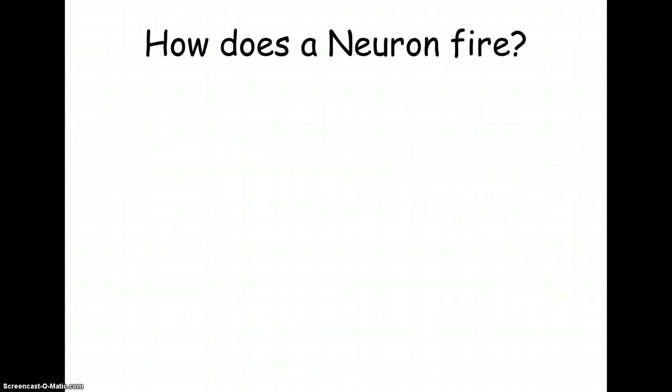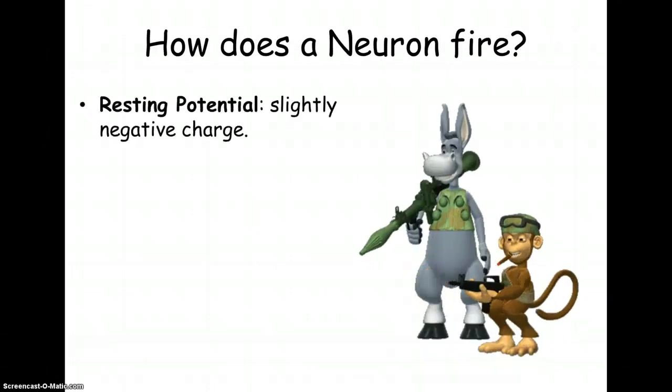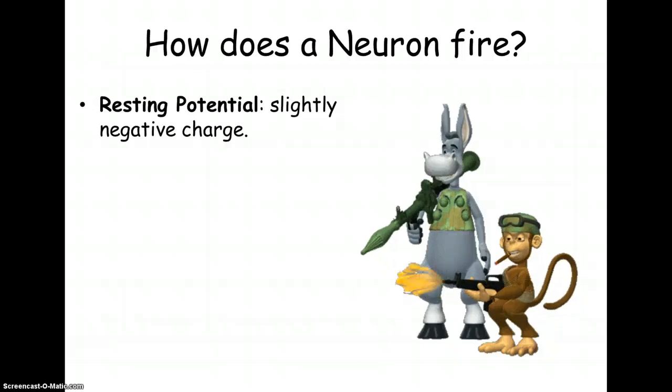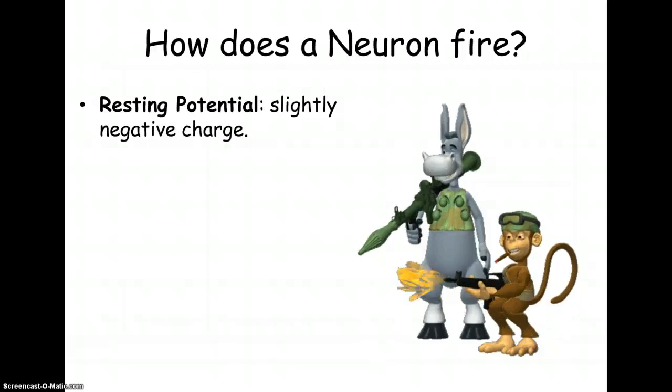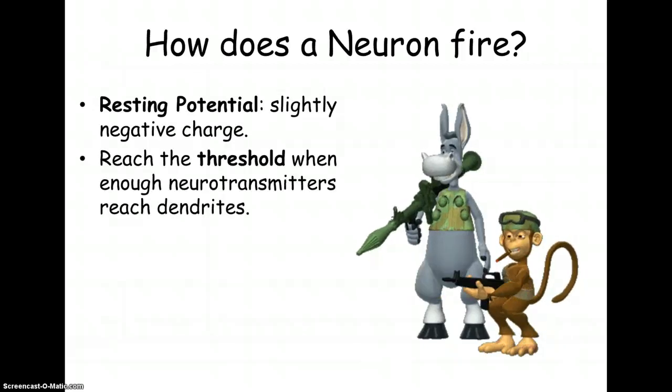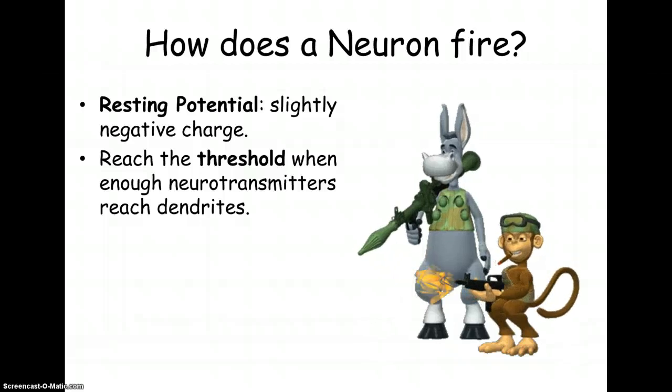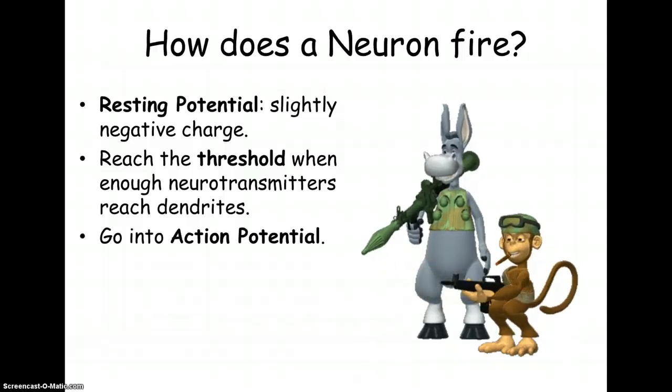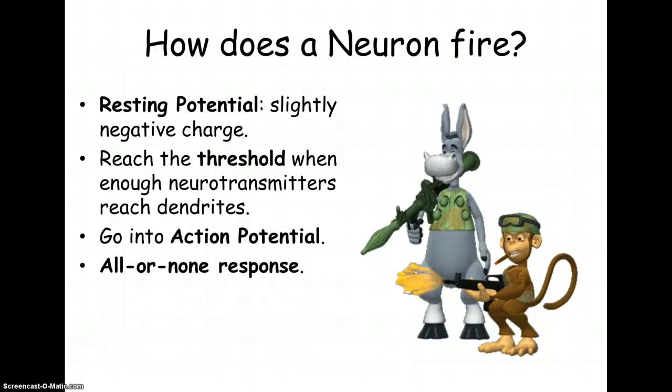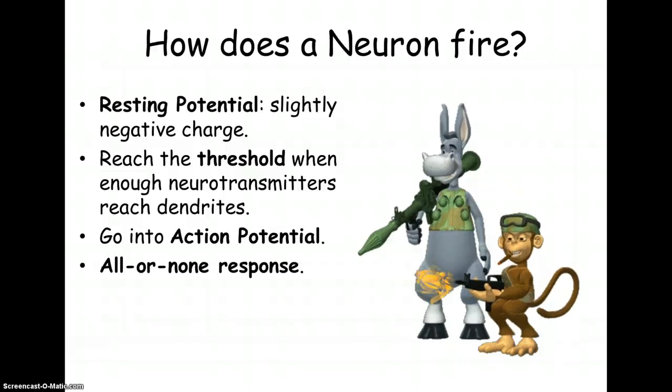So how does a neuron fire? You have to think of it like a gun. At the beginning you would have what's called the resting potential. There's a slightly negative charge in that neuron. At some point there is a threshold and that negative charge changes and enough neurotransmitters reach the dendrites and then you go into what is action potential. Action potential is this all-or-none response.